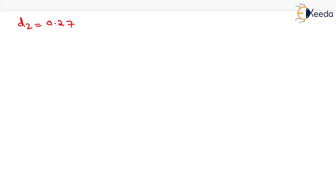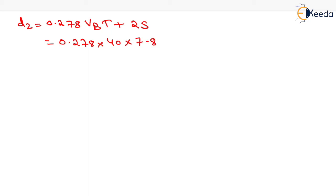D2 equals 0.278 × VB × T + 2 × S. Putting in VB as 40 km per hour, T as 7.8 seconds (already computed), and S as 14 m, we get D2 equals 114.736 m. That is the value of D2.